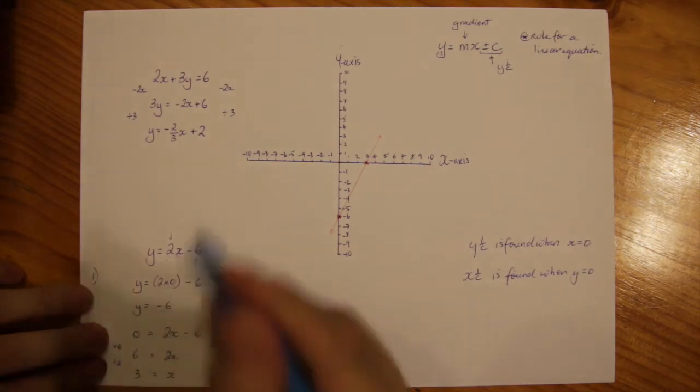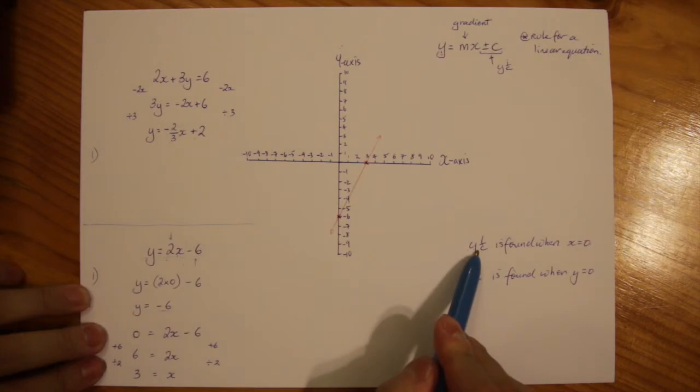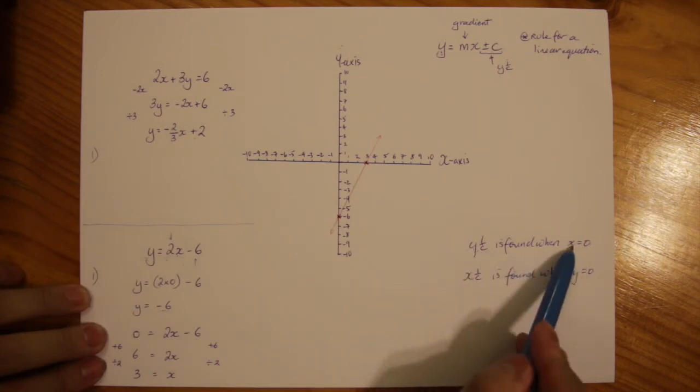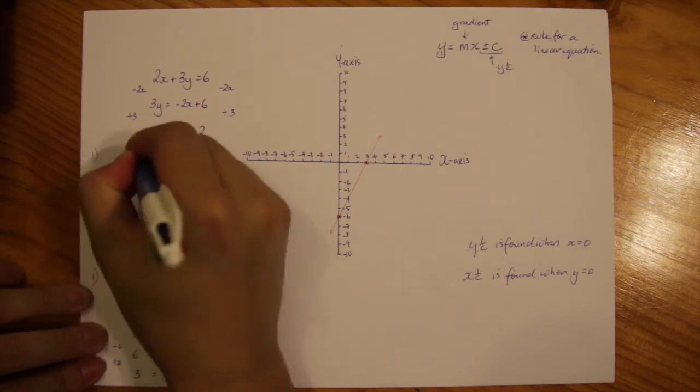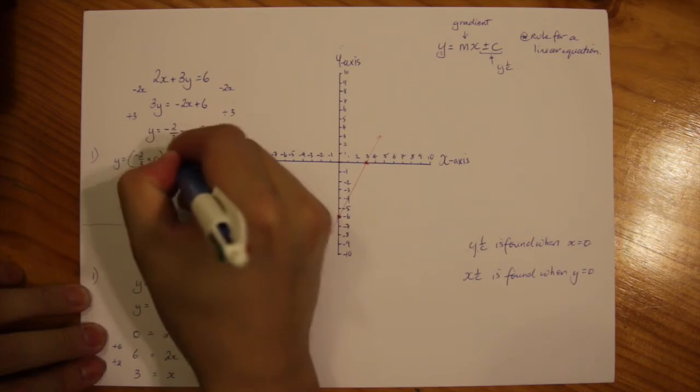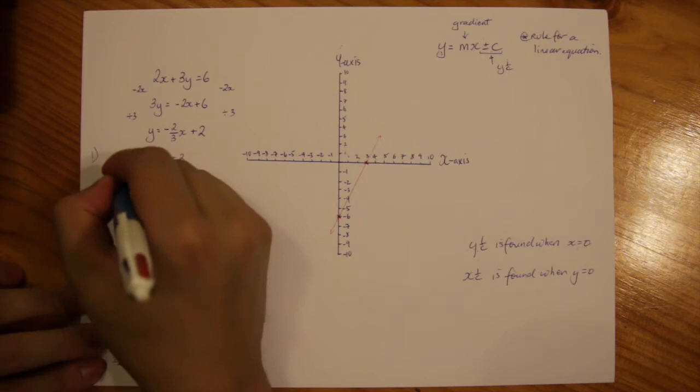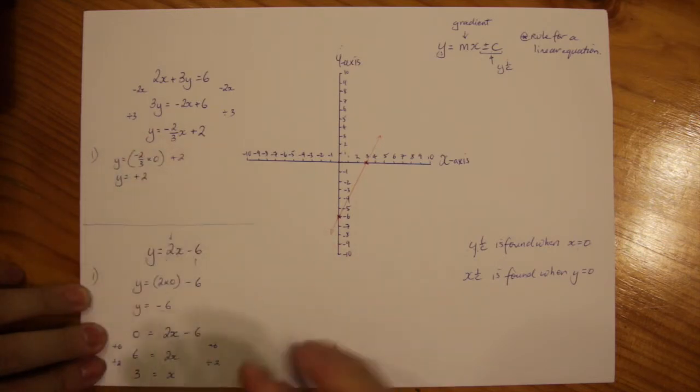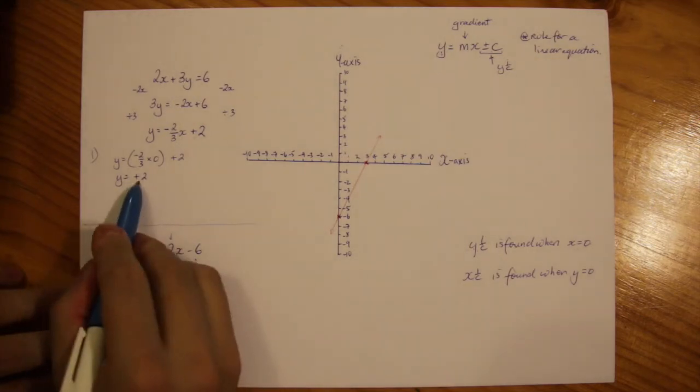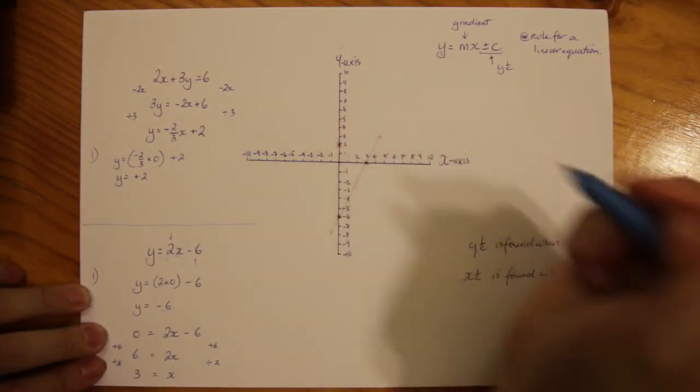Let's put that into practice. First step is to work out the y intercept and I'm going to substitute x for 0. So y equals minus 2 over 3 times 0 plus 2. Know that this will cancel out automatically. So y equals positive 2. So my y intercept is going to be at positive 2 over here.